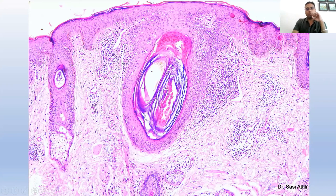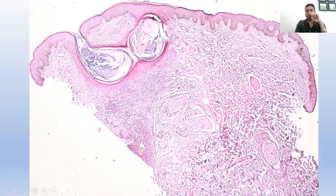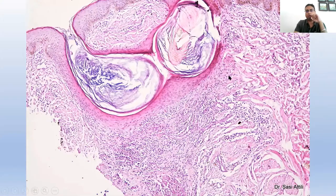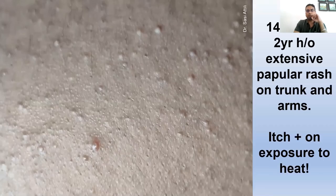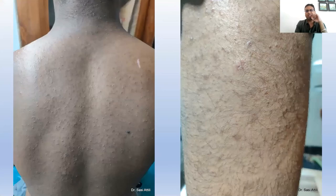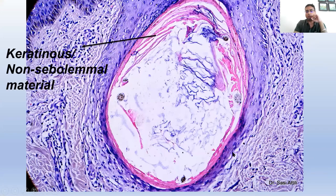Case five: a 23-year-old male with steroid-induced acne form lesions on the trunk, not responding to benzoyl peroxide and doxycycline. Typical comedones, two comedones joining up together, with intense lichenoid inflammation. Going deeper, a cyst has ruptured — the comedone cyst has ruptured, leading to a granulomatous foreign body reaction around the hair shaft. Case six: a 14-year-old male with a two-year history of extensive papular rash on the trunk, itching on exposure to heat. A comedone cyst again, with lichenoid inflammation around the cyst wall. The keratinous material has a granular layer within the infundibular wall — so this is not a steatocystoma, but an infundibular comedone cyst with lichenoid inflammation.